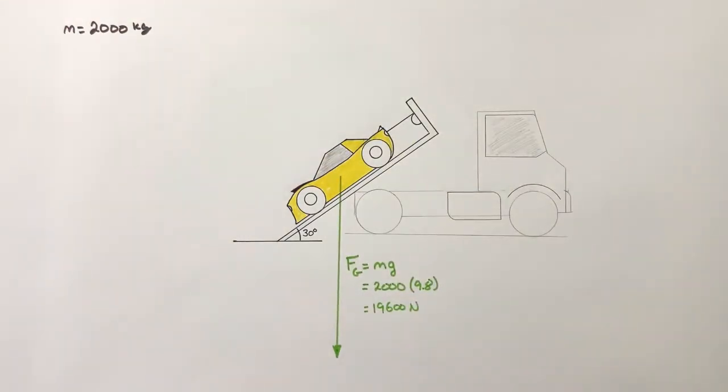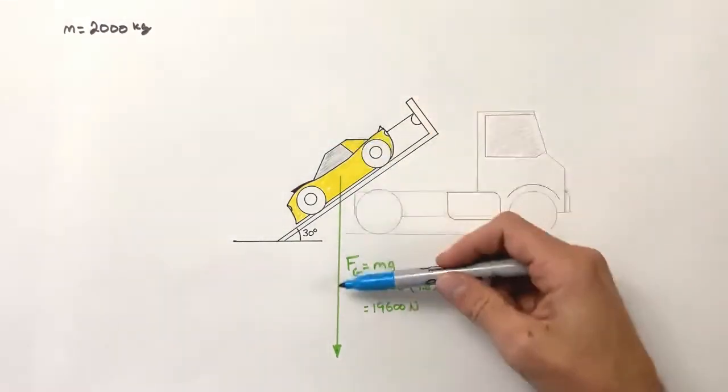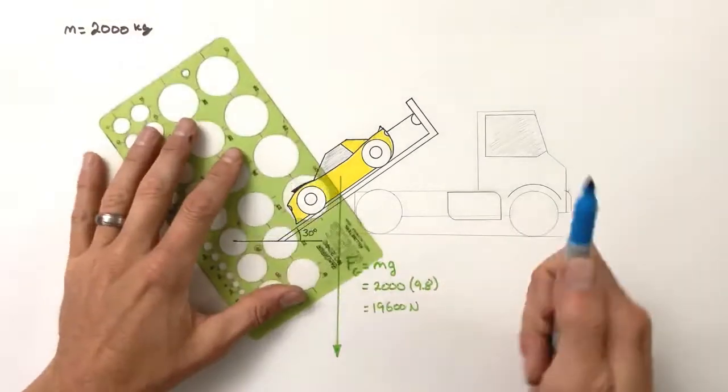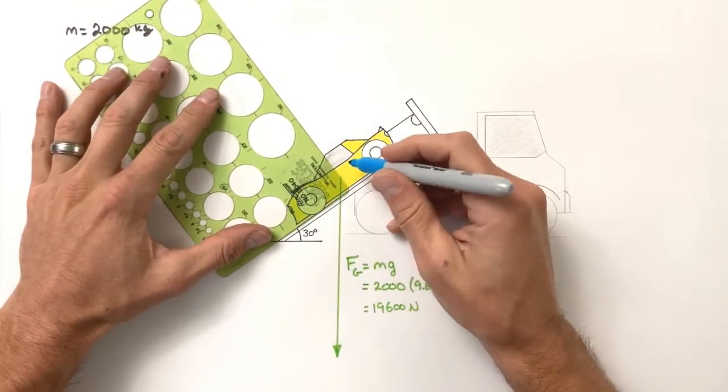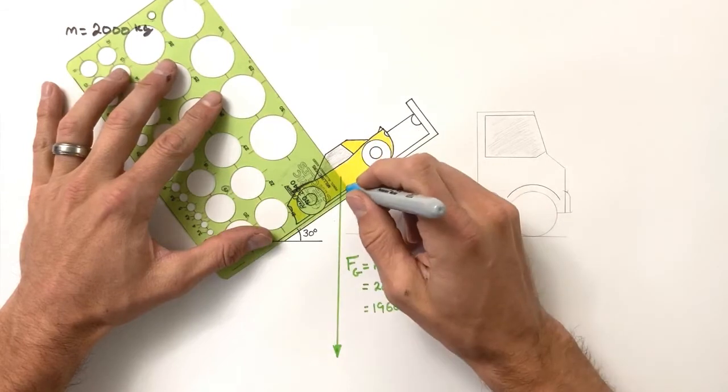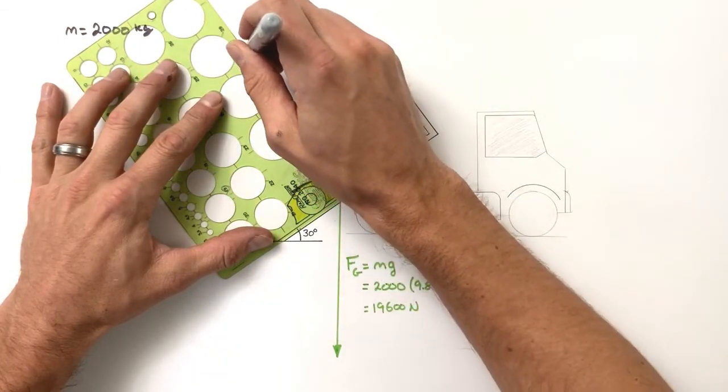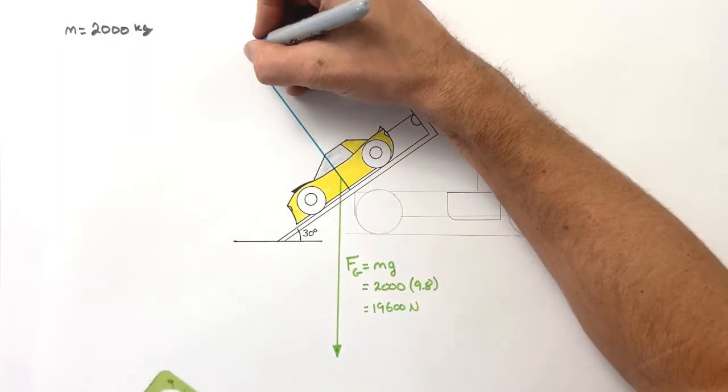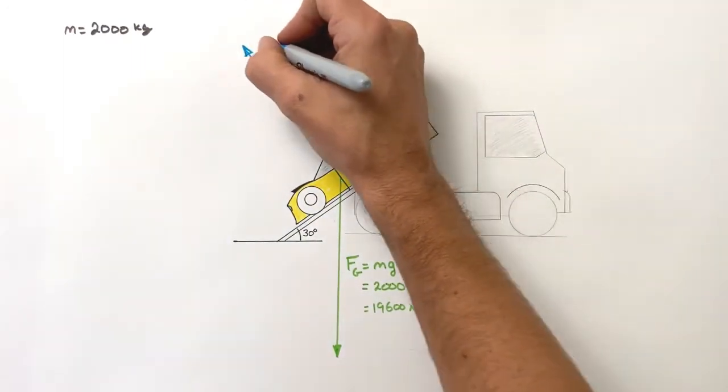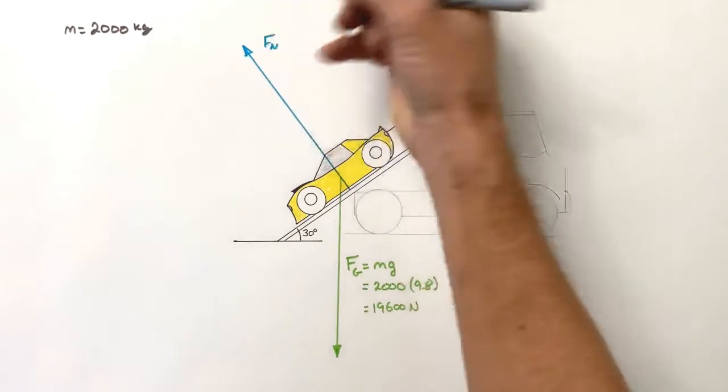Now, there are other forces acting on this car. The car sits on the ramp. It doesn't fall through the ramp like some kind of weird ghost or something. And that is because there is a normal force acting on the car. That normal force is up and to the left. We call this FN. Now, we don't know how large FN is. There's a bad habit that people have to think that FN and MG always have to be the same. And in this case, that is not true.